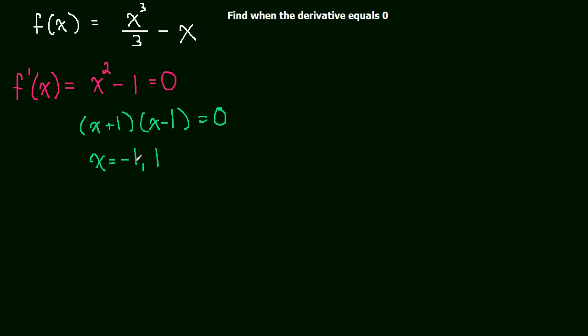When x is negative 1 and when x is 1, the derivative is equal to 0. Okay, that was easy enough. Our problem is done. We did what was asked of us. Find when the derivative equals 0. When the derivative is equal to 0, when x is negative 1 and when x is 1.